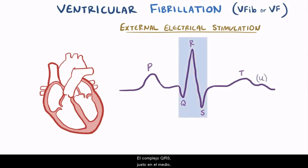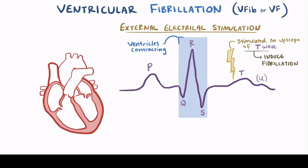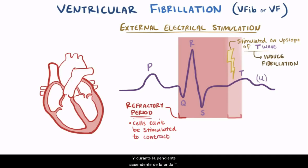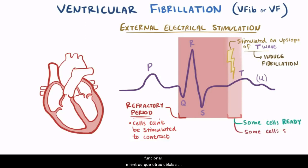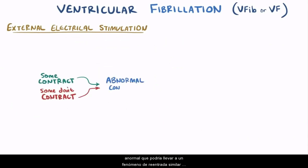The QRS complex, right in the middle, corresponds to the ventricles contracting. If the heart tissue is stimulated at just the right time, during the upslope of the T wave here, it can actually induce fibrillation. Right after the ventricles contract, the cells enter into a refractory period where they can't be stimulated to contract again. During the upslope of the T wave, some cells are starting to come out of refractory, so those cells might be ready to go again, whereas other cells might still be in the refractory phase. Some cells therefore might contract and some might not, and this can lead to abnormal conduction that could lead to a similar reentry phenomenon.